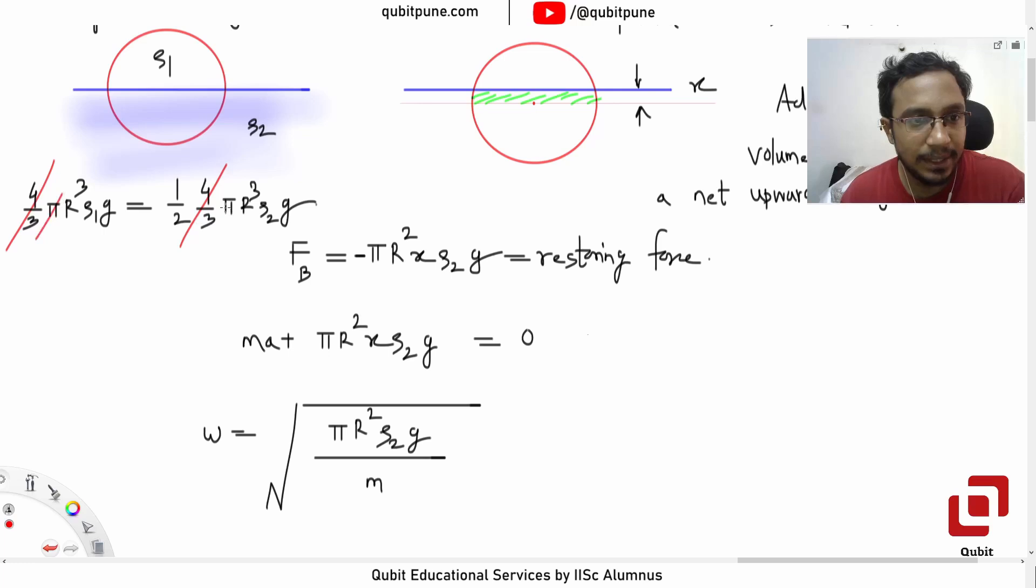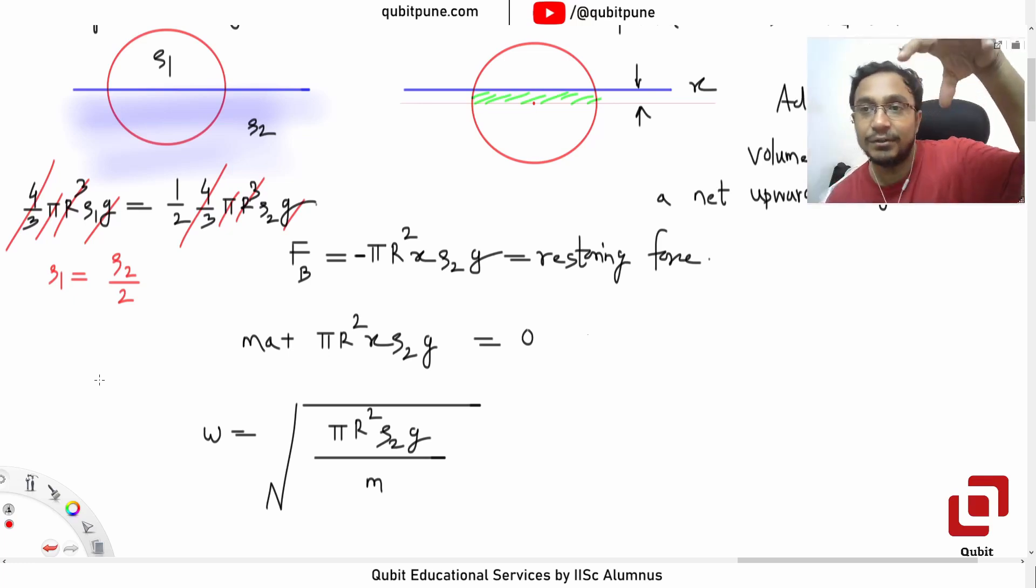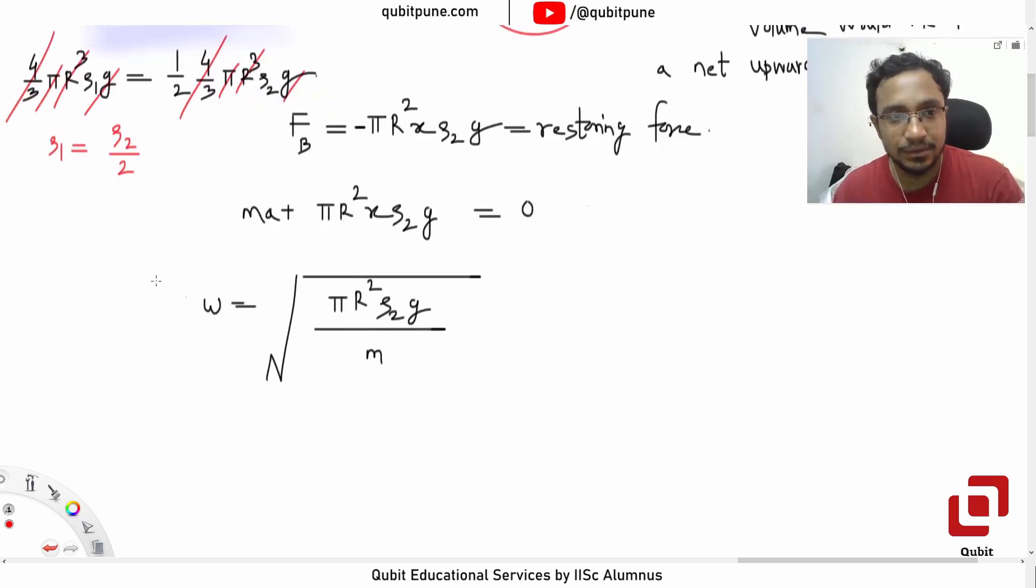(4/3)πr³ρ₁g = (1/2)(4/3)πr³ρ₂g. Everything cancels, so the effective relation is ρ₁ = ρ₂/2. You expect the liquid to be denser than the sphere material because otherwise the sphere would sink entirely.